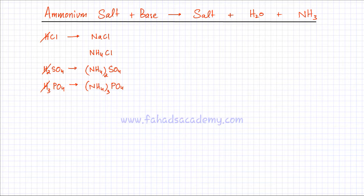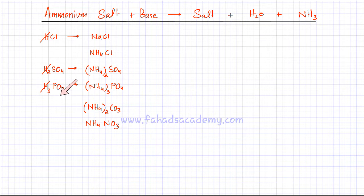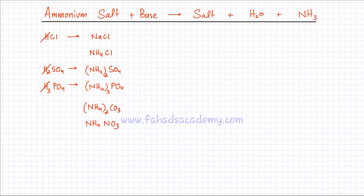We've already written down 3 ammonium salts. You can also have ammonium carbonate and ammonium nitrate, which is NH4NO3. You can use any different acid and come up with an ammonium salt — the list is unlimited. Pick any acid, neutralize it, get rid of the H ions and substitute with ammonium ions. Ammonium chloride, ammonium sulfate, ammonium phosphate, ammonium carbonate, ammonium nitrate — they're all ammonium salts.